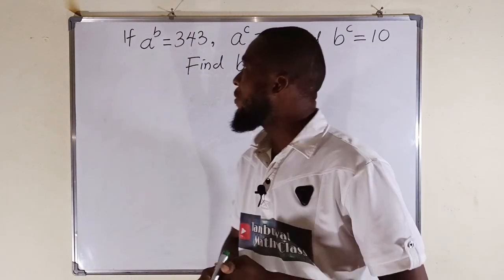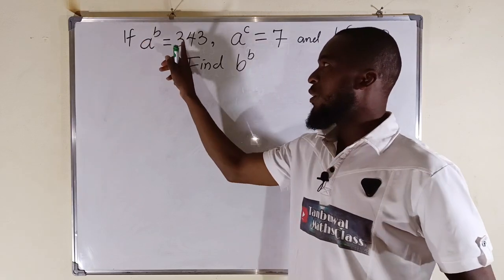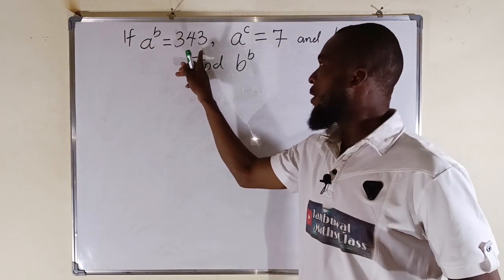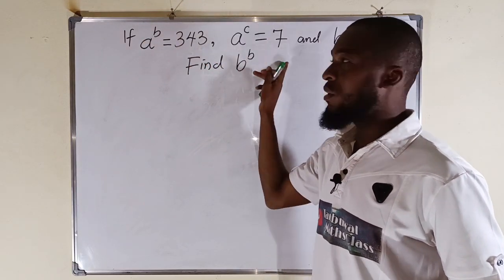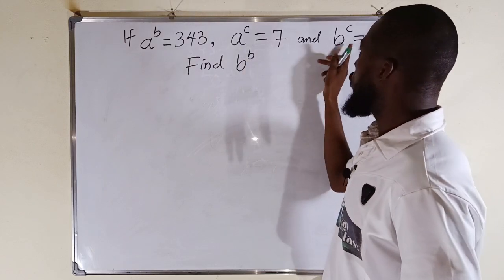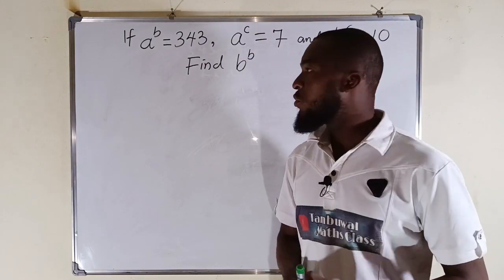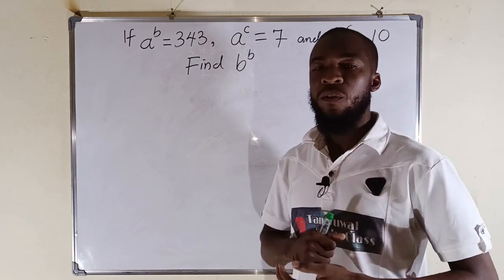And the question reads: if a to the power of b is equal to 343, a to the power of c is equal to 7, and b to the power of c is equal to 10, we are asked to evaluate b to the power of b.